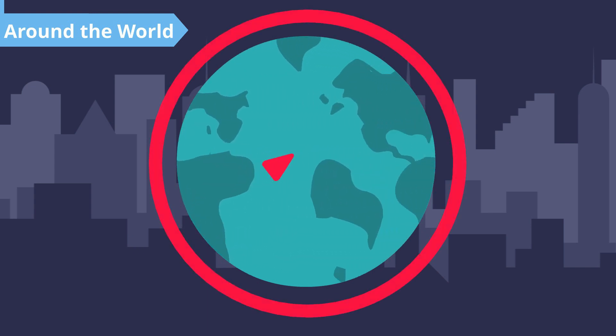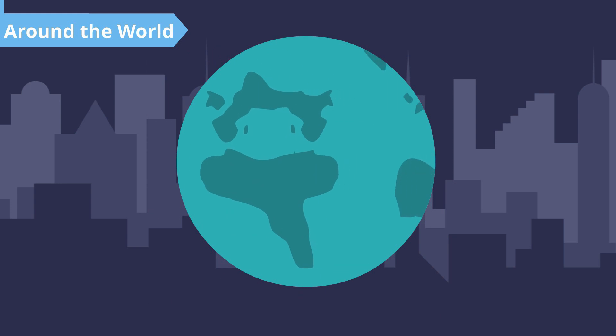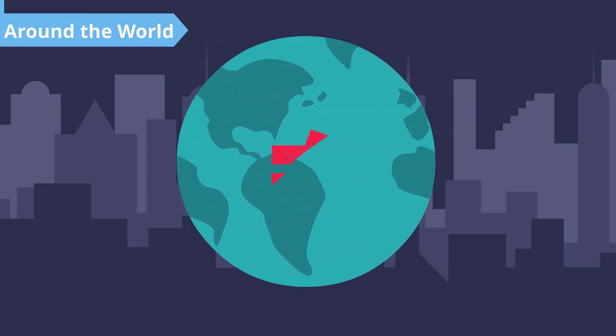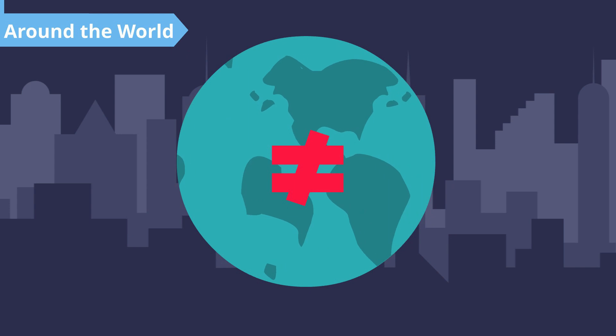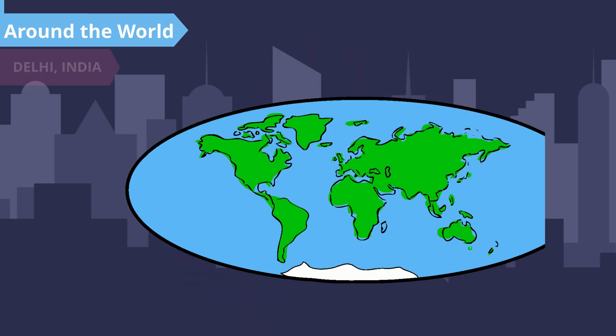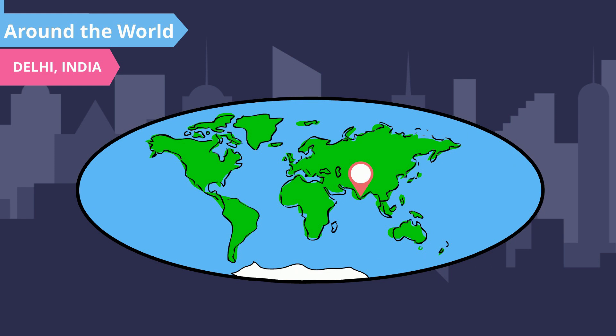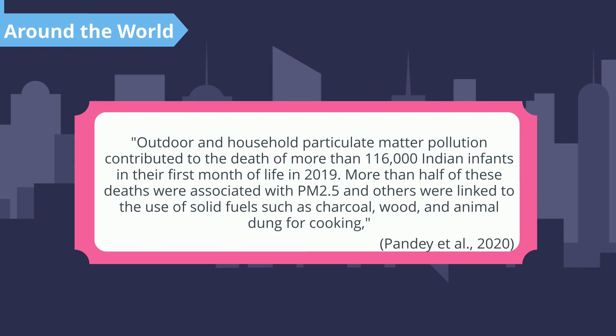Over the years, pollution has risen drastically all over the world. However, its impact on our health affects the population disproportionately. Due to the lack of access to cleaner energy and different farming techniques in developing countries such as Delhi, India, the amount of air pollution in those regions has reached a severe level. According to the State of Global Air in 2020, outdoor and household particulate matter pollution contributed to the death of more than 116,000 Indian infants in the first month of life in 2019. More than half of these deaths were associated with PM2.5, and others were linked to the use of solid fuels such as charcoal, wood, and animal dung for cooking.